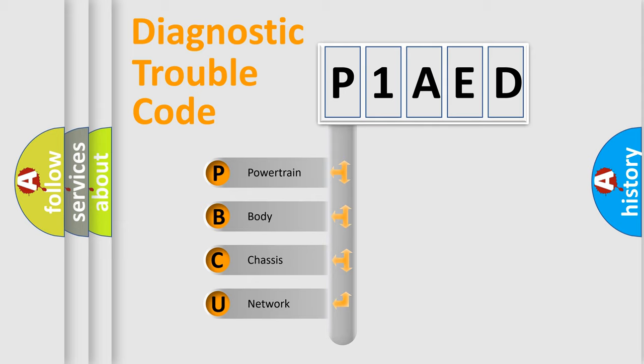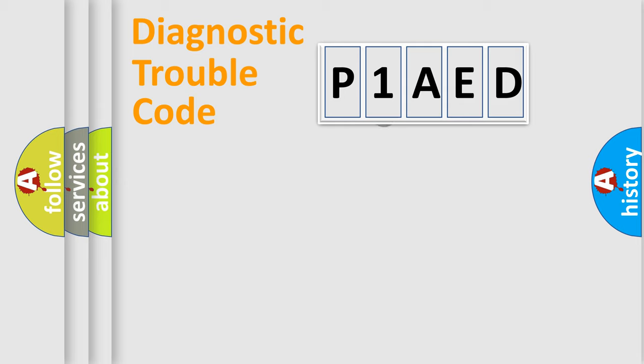We divide the electric system of automobile into four basic units: Powertrain, Body, Chassis, Network. This distribution is defined in the first character code.